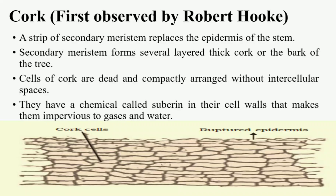Cork cells are dead and do not have intercellular spaces — intercellular spaces are absent in cork cells. The cell wall of cork cells is made up of suberin. Suberin is the chemical present in the cell wall of cork cells, whereas lignin is present in the cell wall of sclerenchyma tissues. Suberin is responsible for the impervious character of cork, not allowing gases and water to enter, thereby providing impermeability.